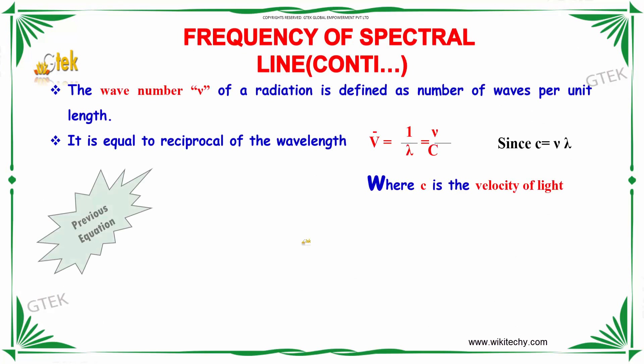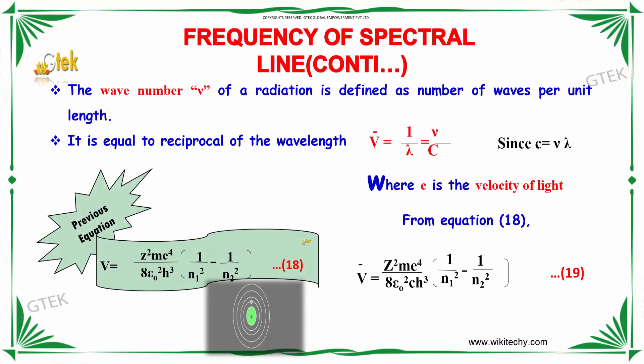The wave number ν̄ of a radiation is defined as number of waves per unit length. It equals the reciprocal of the wavelength: ν̄ = 1/λ = ν/c, where c is the velocity of light.